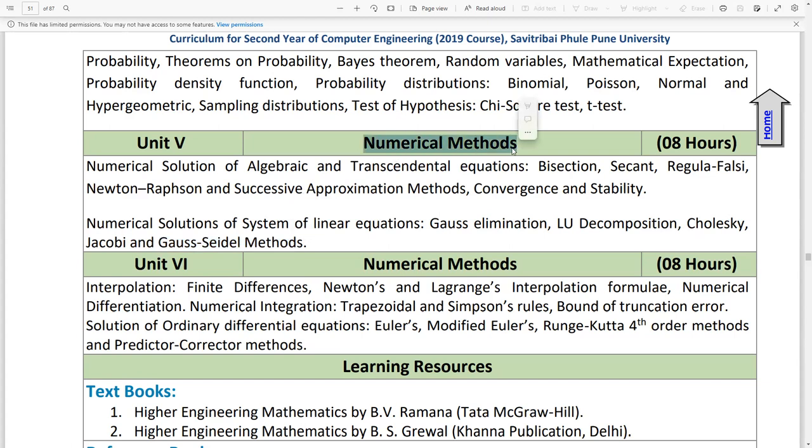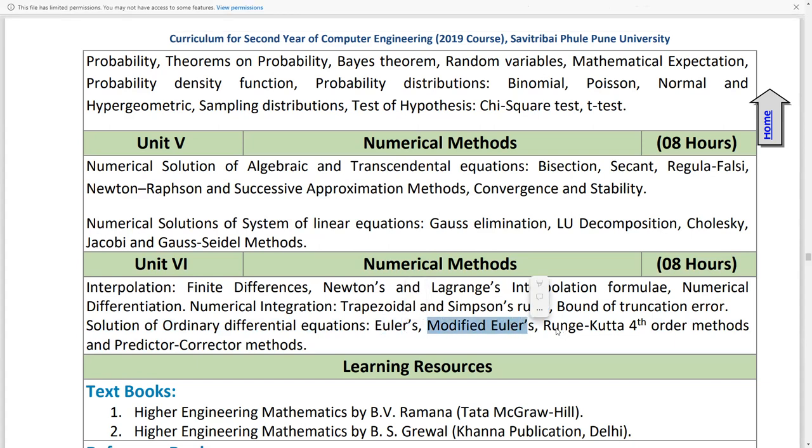Unit 6 is Interpolation. This covers finite differences, Newton's and Lagrange's interpolation formulae, numerical differentiation, numerical integration, trapezoidal and Simpson's rules, bound of truncation error, then solution of ordinary differential equations: Euler's method, modified Euler's method, Runge-Kutta fourth order method, and predictor-corrector method.